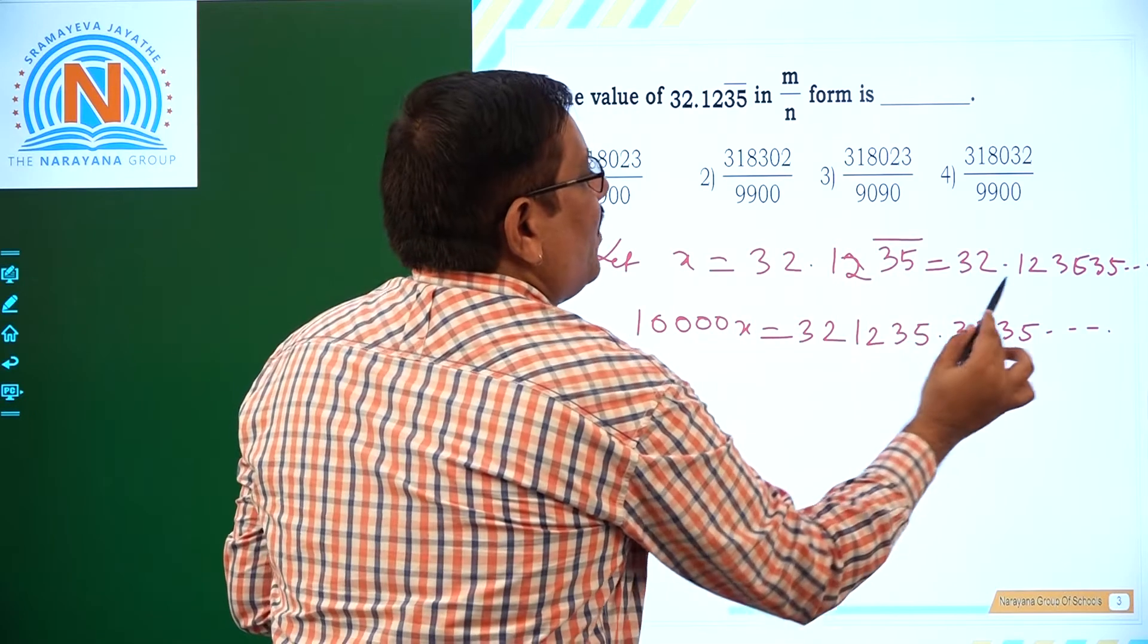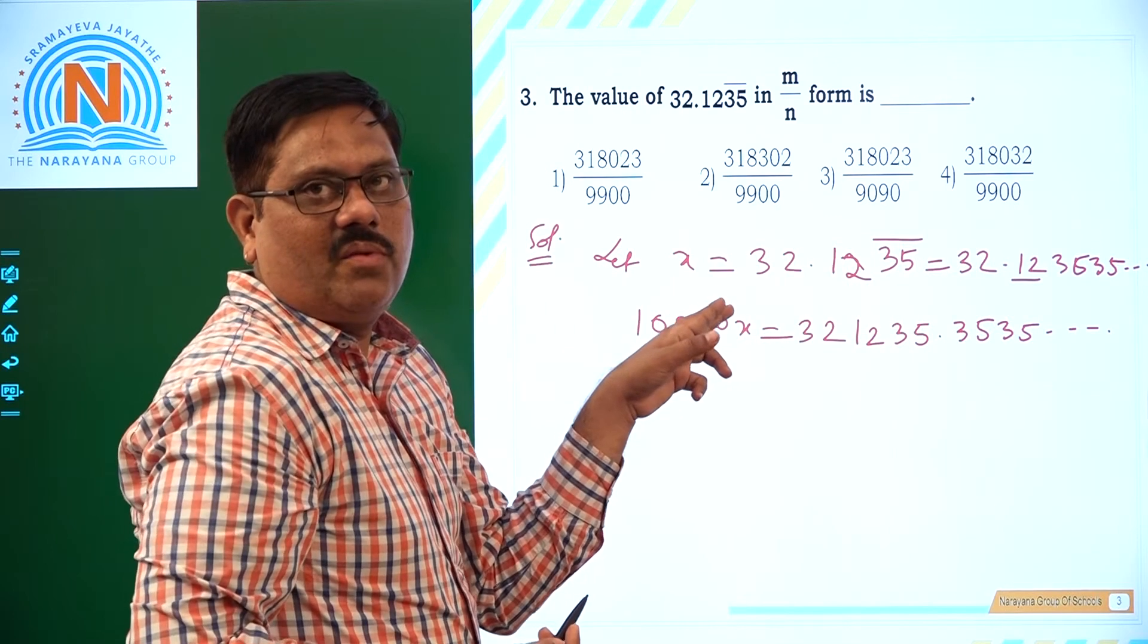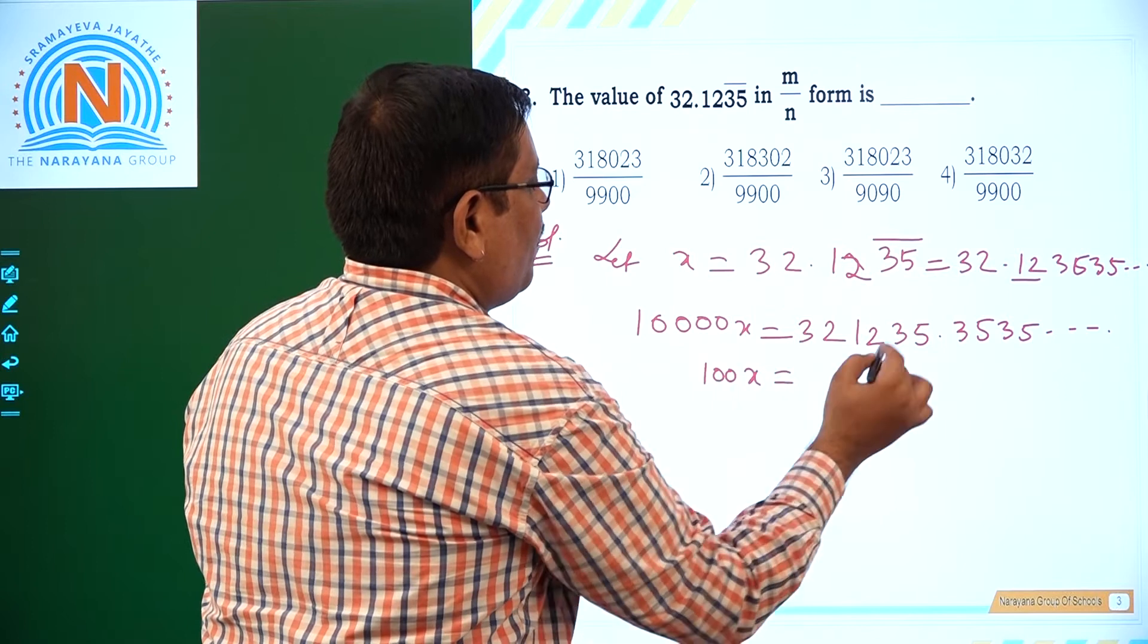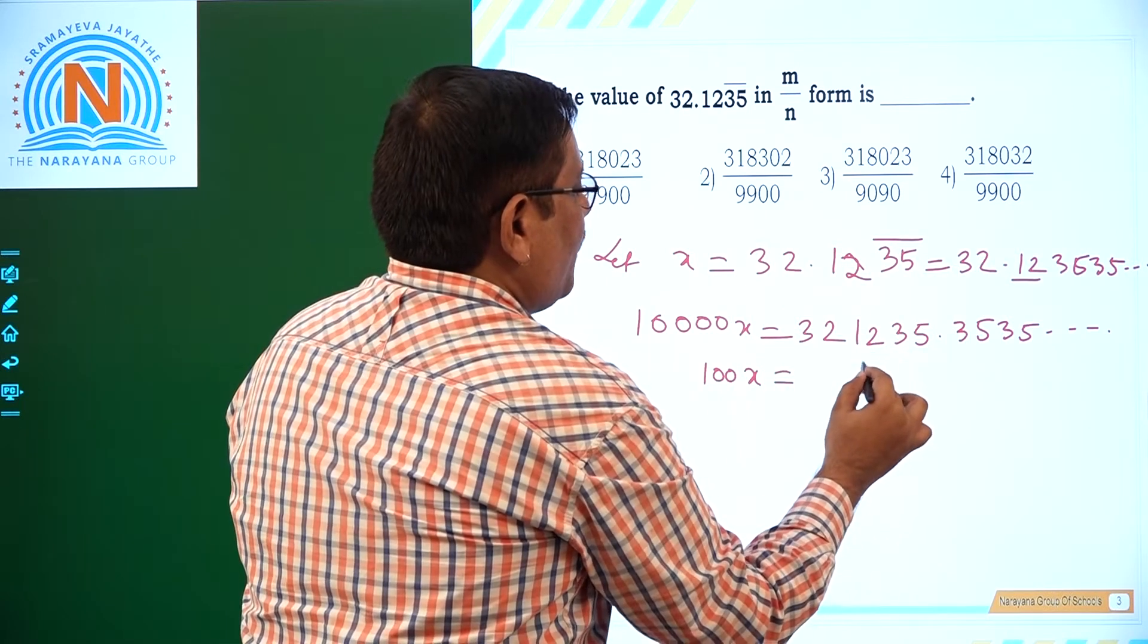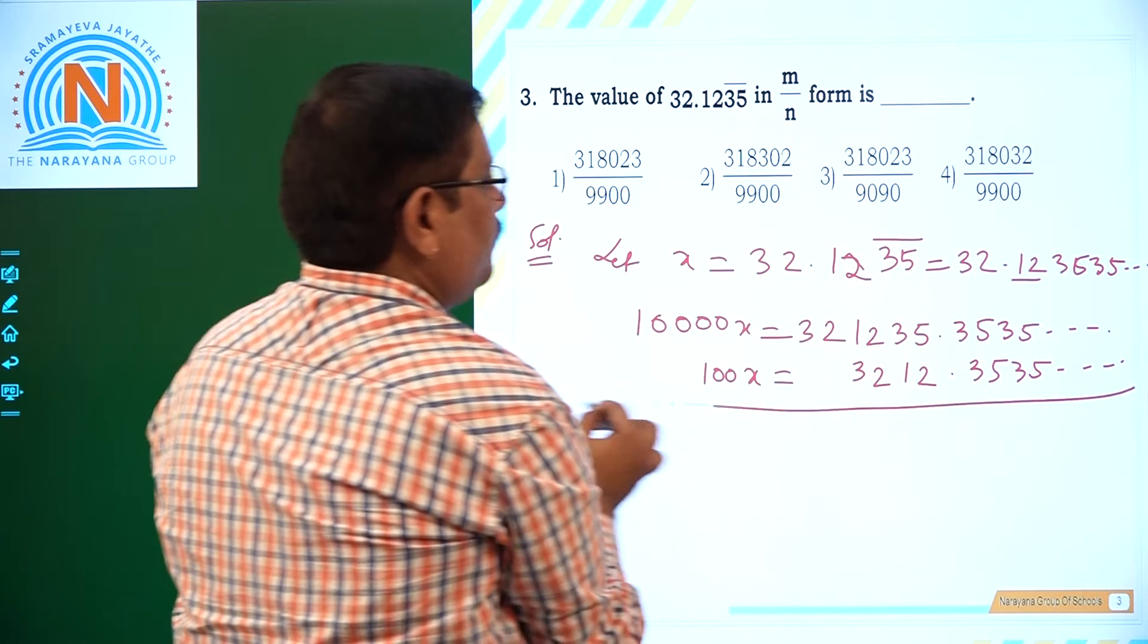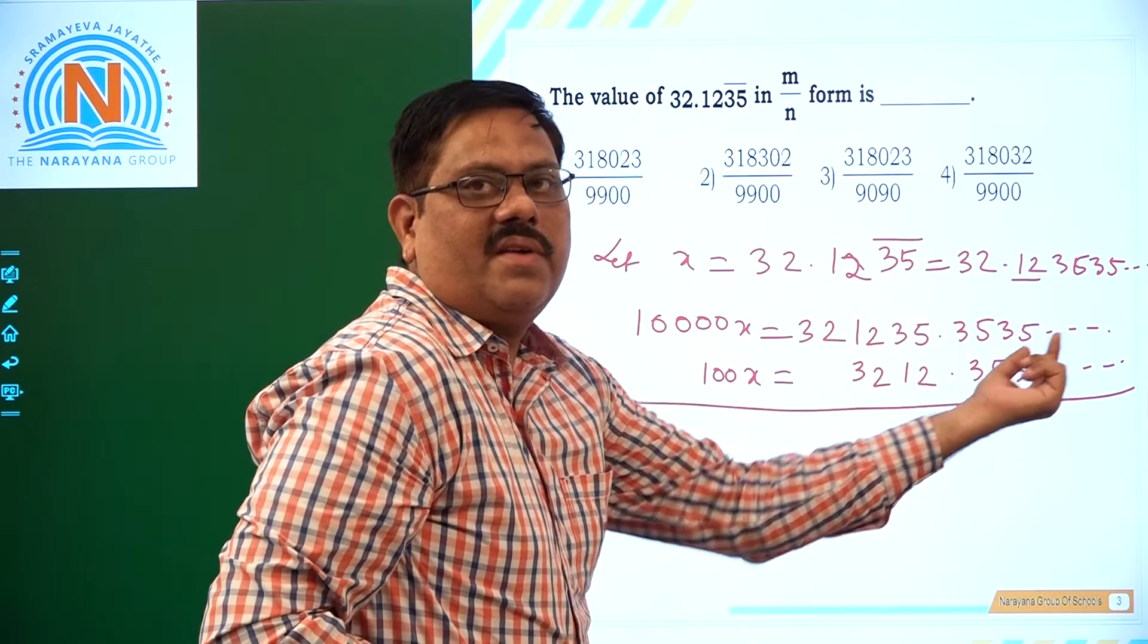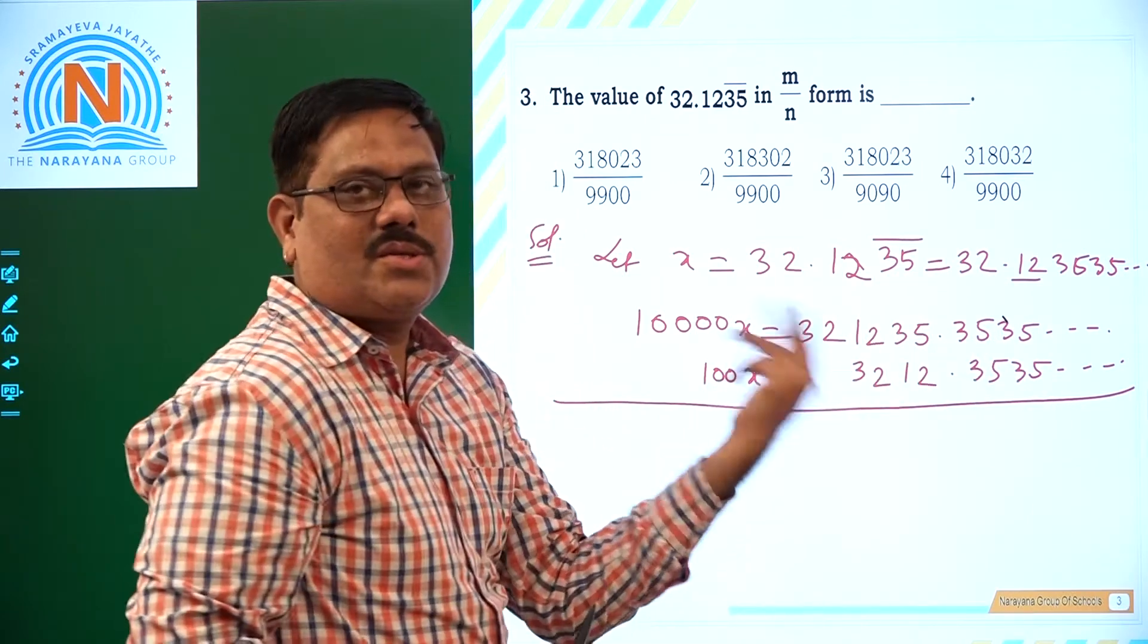Next here, we have 2 digits. They are not recurring. So we have to bring them to the left of decimal. So what to do now? With 100x you have to multiply. If you do multiply with 100, 100x is going to be 3212.353535. So on. We have taken such a care that after decimal, the value is 353535. The recurring decimals are appearing. Then it is easy for us to solve.